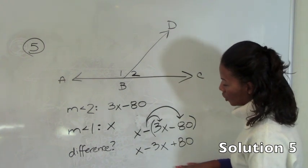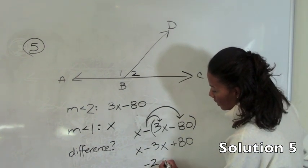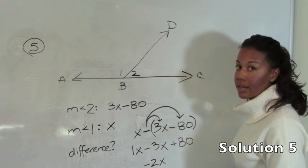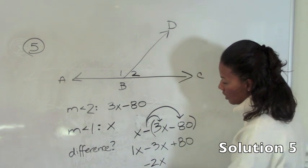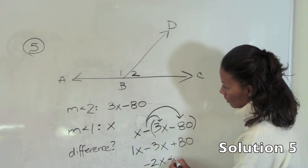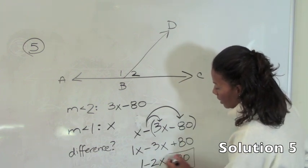Then we collect our like terms: x minus 3x is negative 2x. To help you remember that, remember there is a coefficient of 1 in front of this x if nothing is written there. So it is simply 1 minus 3 which is negative 2. So negative 2x plus 80. So our answer is B.